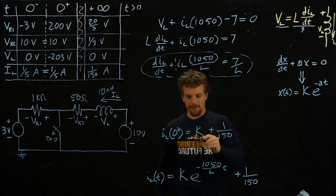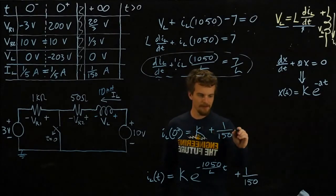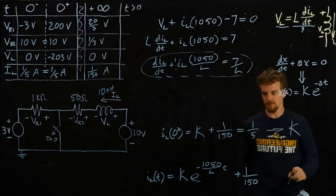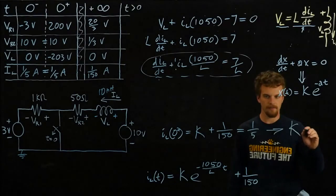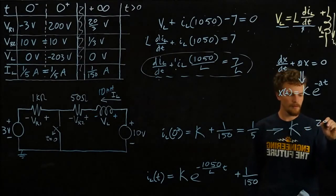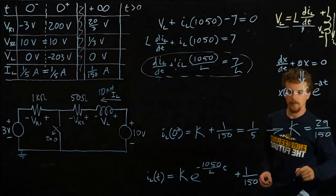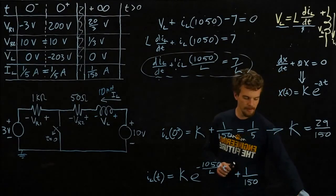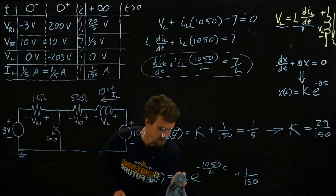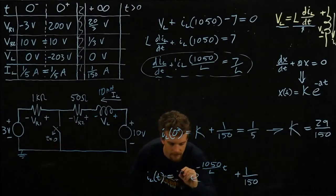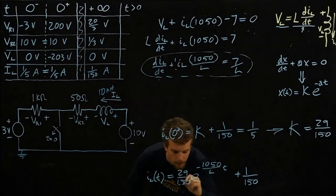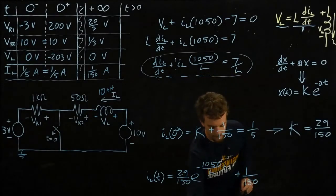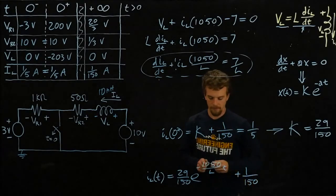Okay, so what does k have to equal for this whole term to equal one fifth? We say that k is equal to 29 over 150. Okay, so now we can substitute in for k, 29 over 150, and we have an equation that describes IL for all t greater than zero.